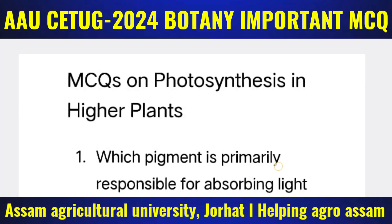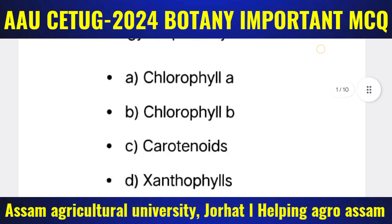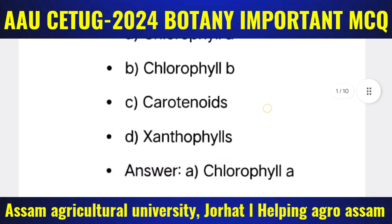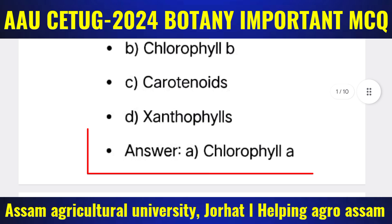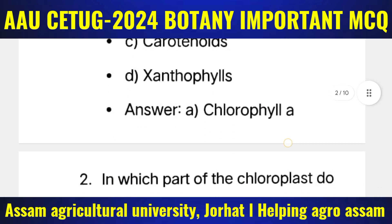Question 1: Which pigment is primarily responsible for absorbing light energy for photosynthesis? The options are: (a) Chlorophyll a, (b) Chlorophyll b, (c) Carotenes, (d) Xanthophylls. The correct answer is option A — Chlorophyll a.